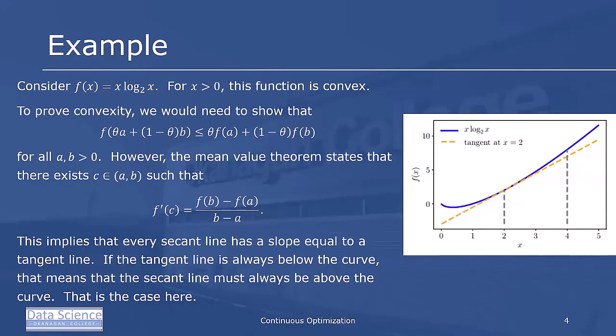In this example, we consider f(x) equals base 2 log of x times x. For x greater than 0, this function is convex. In order to prove convexity, we would need to show that f(θa + (1-θ)b) ≤ θf(a) + (1-θ)f(b).